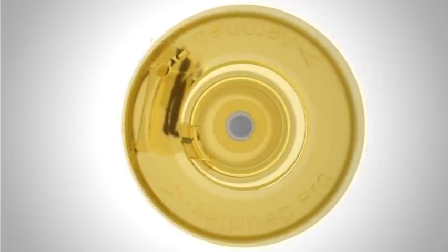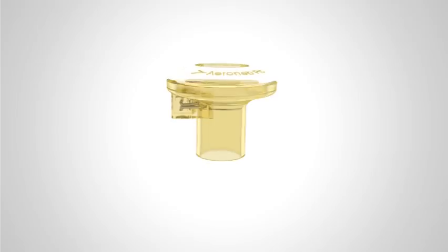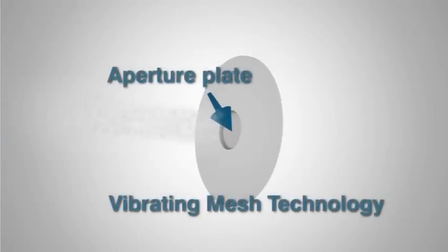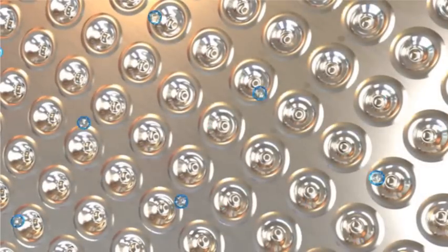The key to the Aeroneb vibrating mesh technology is the aperture plate surrounded by a vibrational element. Only 10 millimeters in diameter, the aperture plate contains over 1000 precision-formed tapered holes.